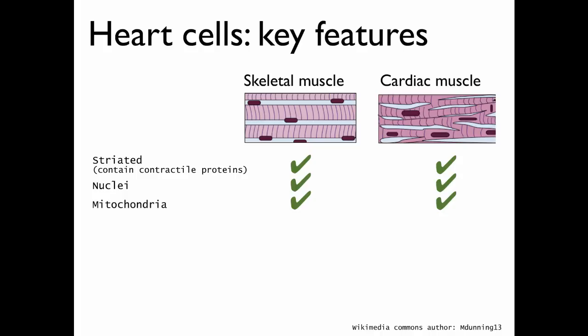They both contain mitochondria, which allows them to produce ATP through oxidative phosphorylation. In contrast, only cardiac muscle engages in spontaneous depolarization. That means it can generate an action potential by itself without external control from a motor neuron. In contrast, skeletal muscle needs a motor neuron in order to depolarize.